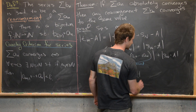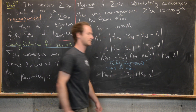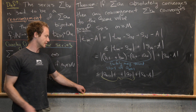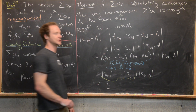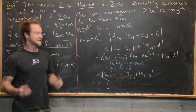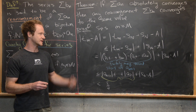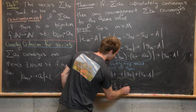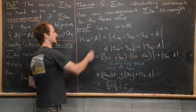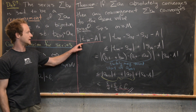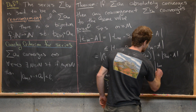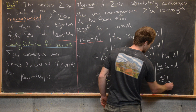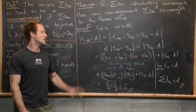Bringing this down, we have |A sub N+1| + ... + |A sub K| plus |S sub N minus A|. By the Cauchy criterion applied to the sum of |A_N|, the first part is less than epsilon over 2. And by the convergence of S_N to A and all of our construction choices, the second part is also less than epsilon over 2, making the whole expression less than epsilon. Looking at the extreme left and right of the inequality, we have shown that the limit as M goes to infinity of T sub M equals capital A — which means the sum of B_N also equals capital A. And that's a good place to stop.